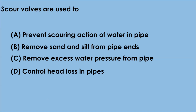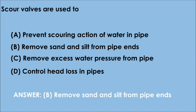Question 4. Scour valves are used to: A. Prevent scoring action of water in pipe, B. Remove sand and silt from pipe ends, C. Remove excess water pressure from pipe, D. Control head loss in pipe. The correct answer is option B — scour valves are used to remove sand and silt from pipe ends.